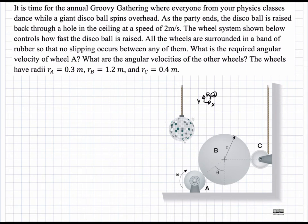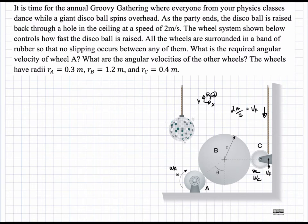We're going to start with the final velocity vf, which needs to be equal to 2 meters per second. This will spin the mechanism, and each of these three components is going to have a different angular velocity. We are asked to determine omega a. We have omega c going one way and omega b going another. I'm going to solve this problem with vectors, but once you know how to do that, you can simplify it and solve with scalars.